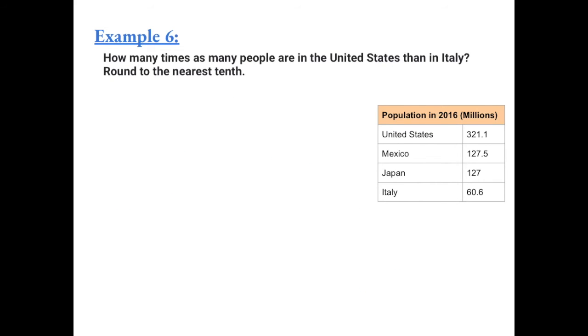Example 6: How many times as many people are in the United States than in Italy? Round to the nearest tenth. In the United States, there are 321.1 million people, and in Italy, there are 60.6 million.